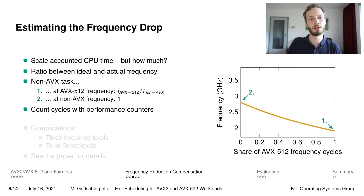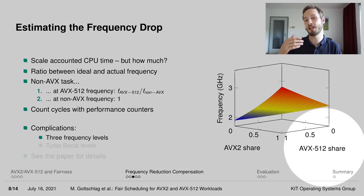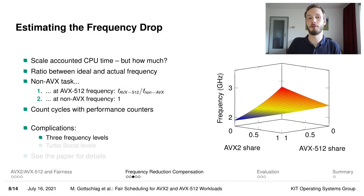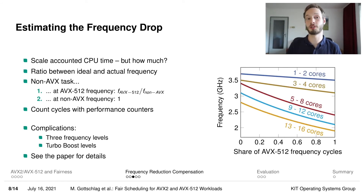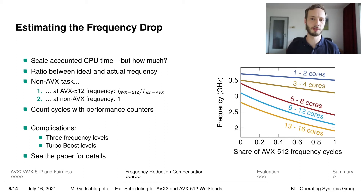This concept seems fairly simple. In practice, it becomes a bit more difficult as the frequency reduction not only depends on the time spent at the AVX512 level, but also the time spent at the AVX2 frequency level, which just adds one more dimension to the problem. And more importantly, we also need to take care about Turbo Boost. Turbo Boost introduces a large number of additional frequency levels depending on the number of active cores, and the problem is that the operating system does not actually know how many cores have been active during the last time slice on average. If you're interested in our solution for this problem, we invite you to have a look at the paper.